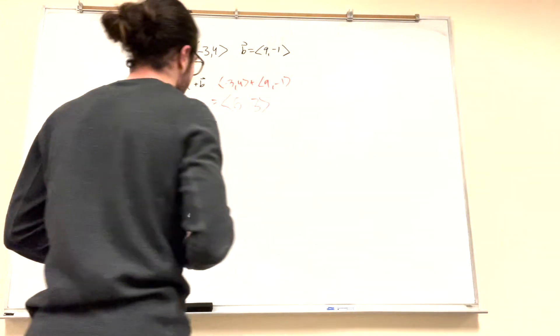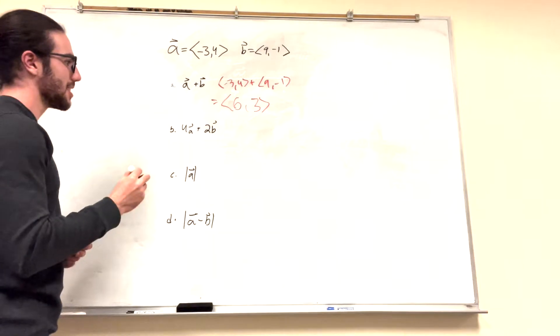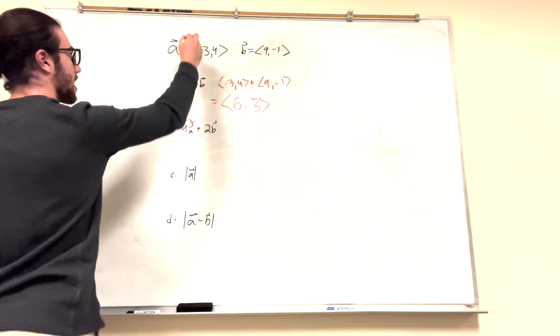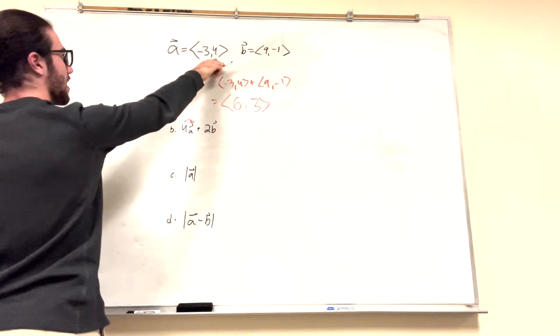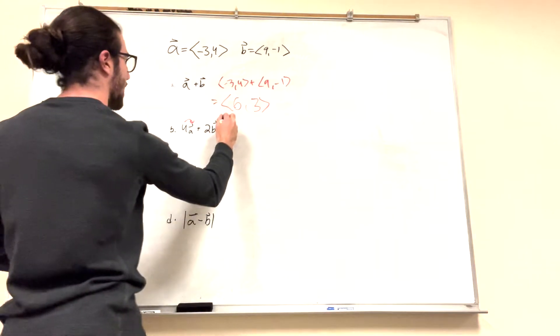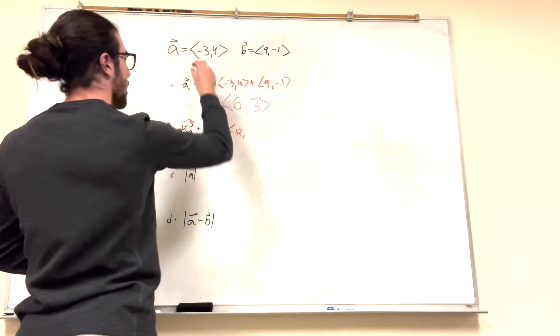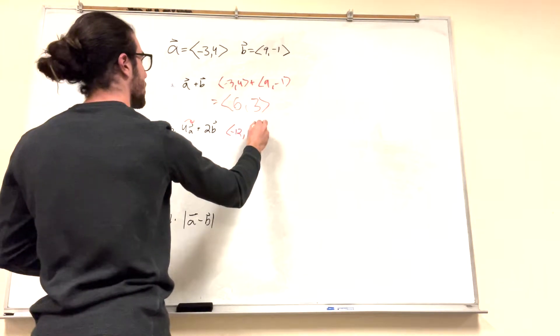Now when we get to some complex stuff, 4a plus 2b, well, this distributes in, basically. You could say 4 goes into this. So it's going to be 4 times negative 3, and then 4 times 4. So we can write this as 4 times negative 3 is negative 12. 4 times 4 is 16. That's good.